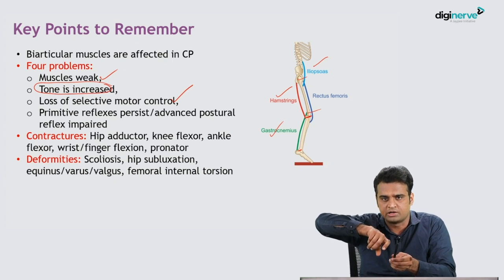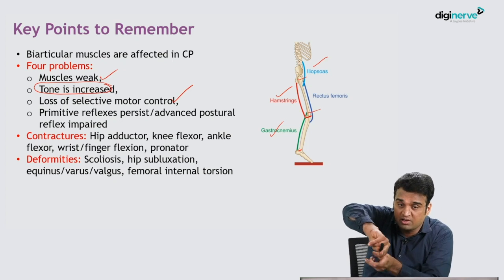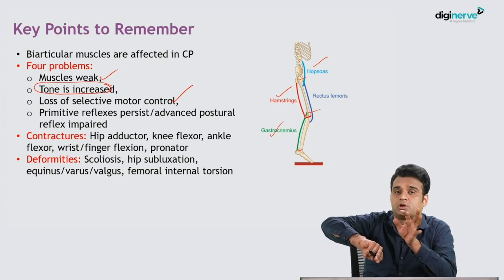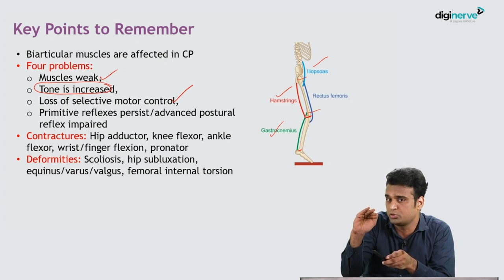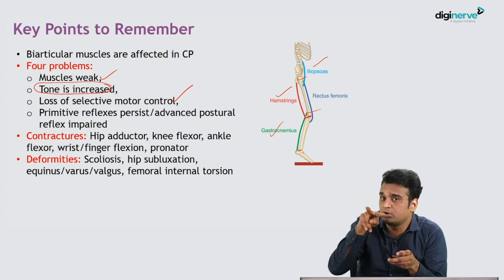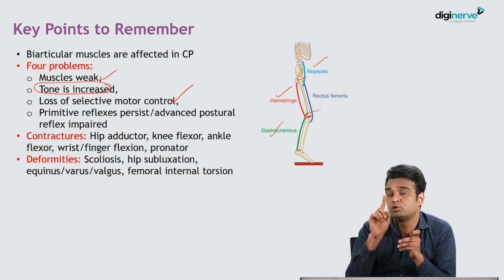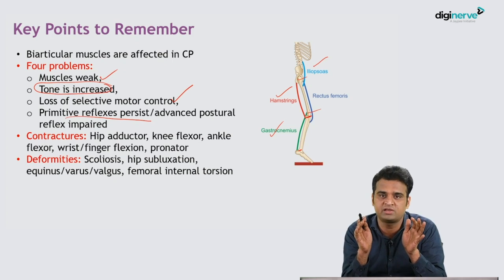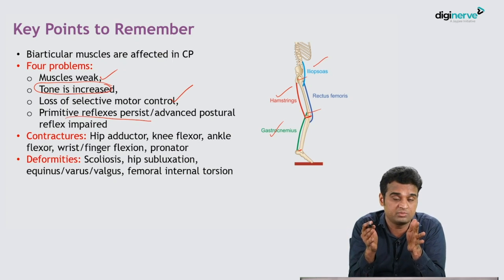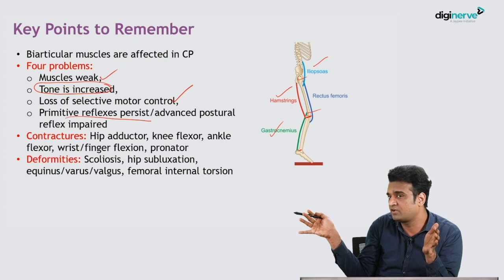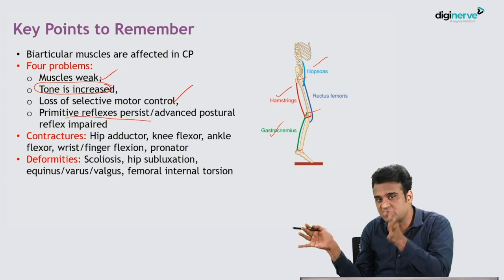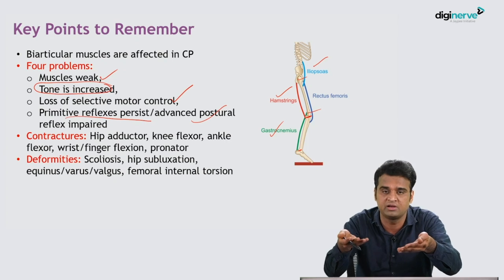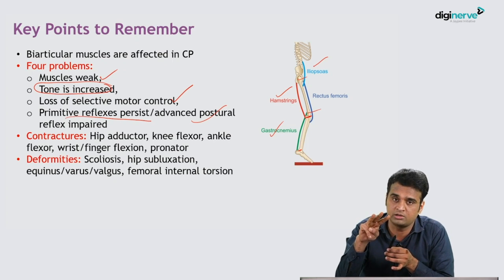When agonists and antagonists co-contract simultaneously — biceps and triceps, pronators and supinators, flexors and extensors — the hand gets twisted and the child cannot perform the task. This is loss of selective motor control, commonly seen in cerebral palsy. Additionally, primitive reflexes such as the Moro reflex and ATNR may persist, and advanced postural reflexes that should have appeared are absent. The four core problems in cerebral palsy are: increased tone, muscle weakness, loss of selective motor control, and persistence of primitive reflexes.